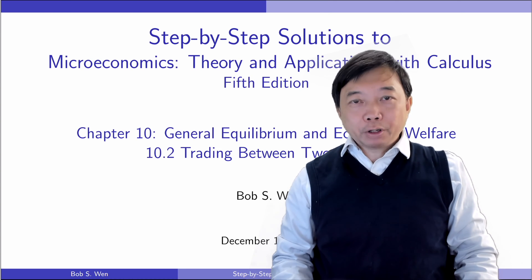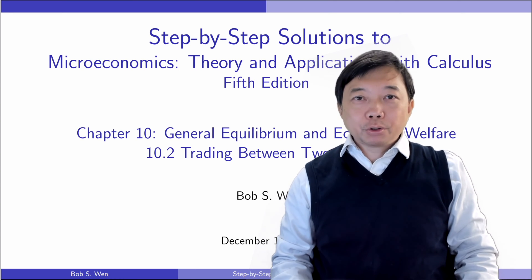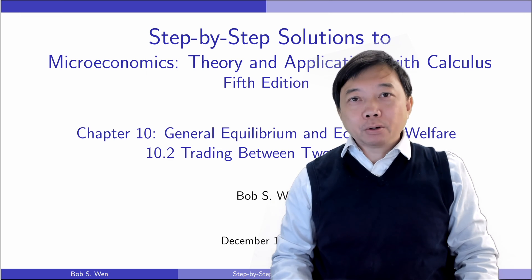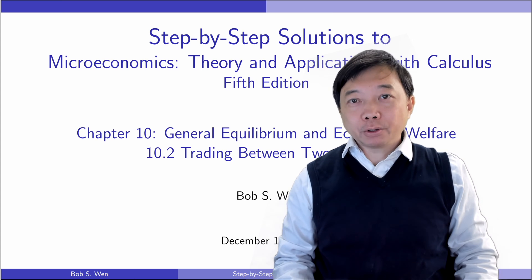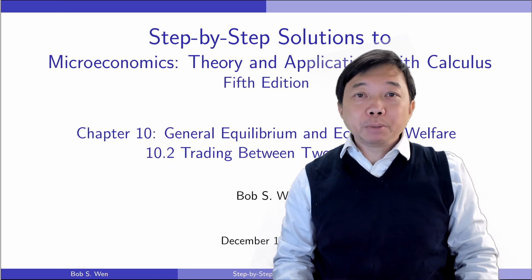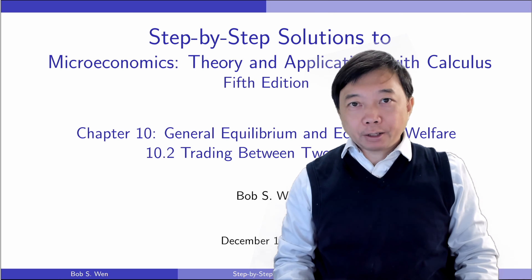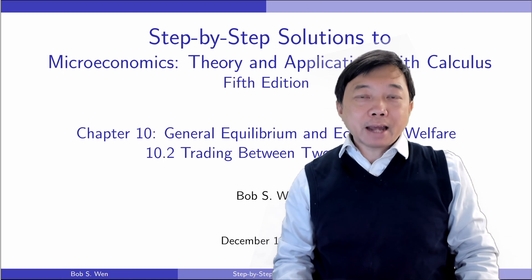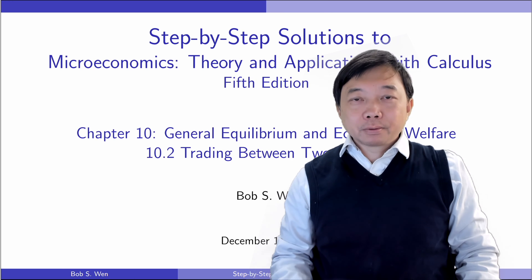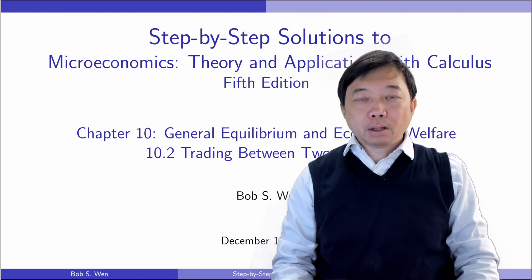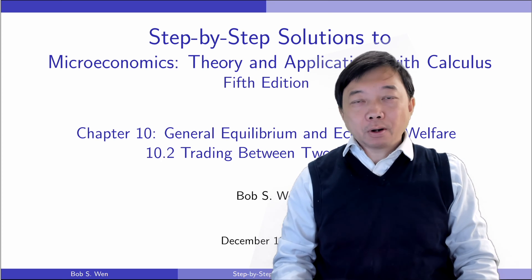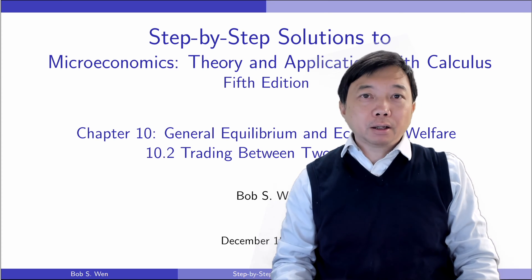Hi, I'm Bob. We will continue our solutions to the exercises in the section about trading between two people. We use the Edgeworth box to find the Pareto efficient bundles of goods where no further mutually beneficial trades are possible. I use the textbook Microeconomics Theory and Applications with Calculus, the fifth edition by Professor Jeffrey Perloff. An introductory microeconomics course can be found in the description below.